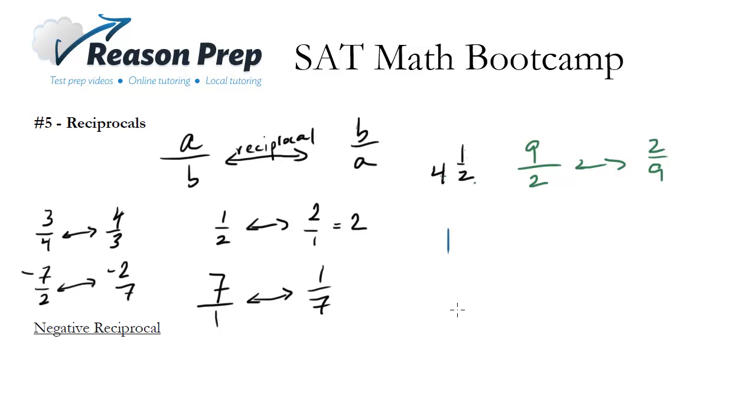What about 1? Well 1 is just the same thing as 1 over 1, and the reciprocal of 1 over 1 is 1 over 1, which is just 1. So 1's reciprocal is itself. Negative 1's reciprocal is negative 1.